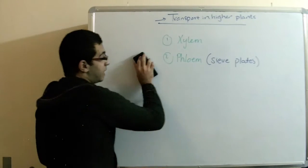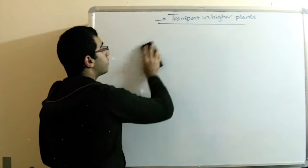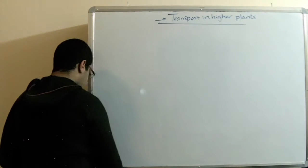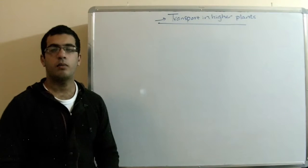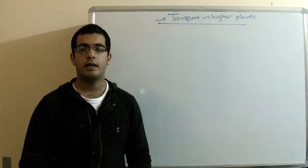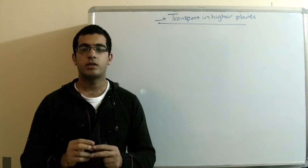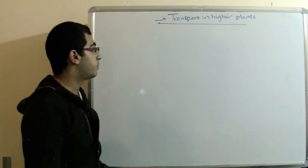So, in order to illustrate more the transport in higher plants, I'll draw a transverse section in the stem of a dicot plant. And by the way, dicot means a plant that gives seeds with two cotyledons. So, it's called a dicot plant.